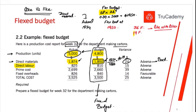Whenever a fixed budget is created at one level of activity and actual activity differs, we always need a flex budget to compare against actual performance. If we mistakenly compare actual with the fixed budget, direct material appears adverse and labor appears at cost. But comparing with the flex budget, both direct material and direct labor are favorable — completely different information.